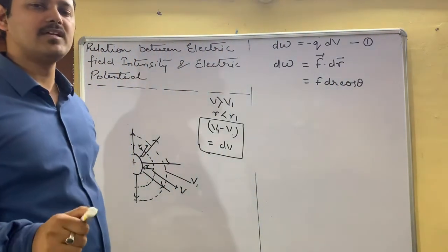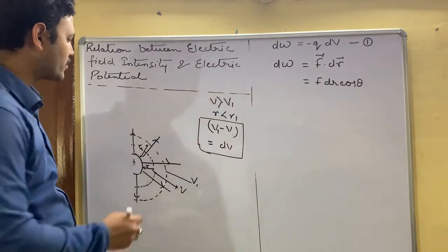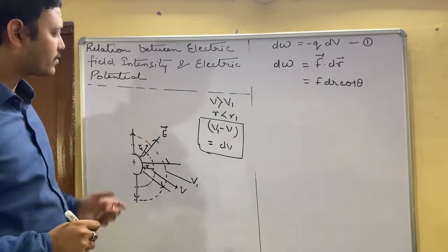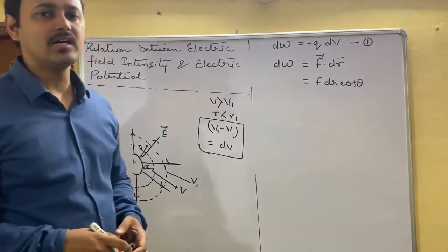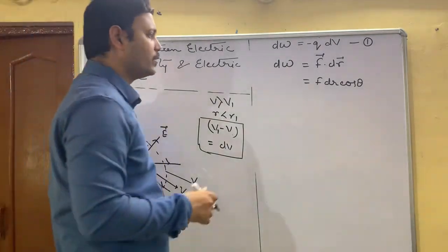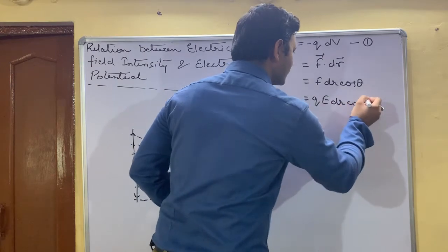Now what is the force experienced by a charge in uniform electric field? This is the uniform electric field as you can see. This is the electric field, electric field lines. So what is the force experienced by a charge in uniform electric field? Which is given by Q E, Q E dr cos theta.